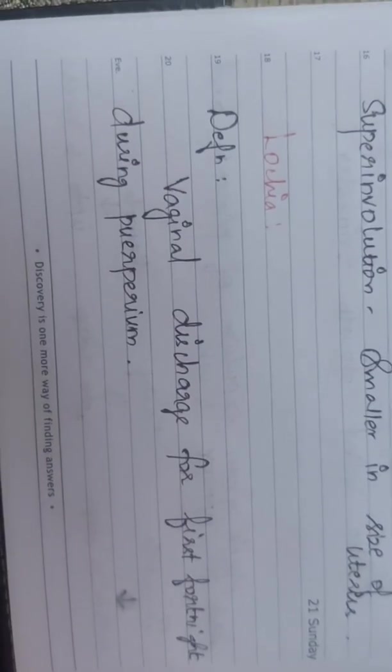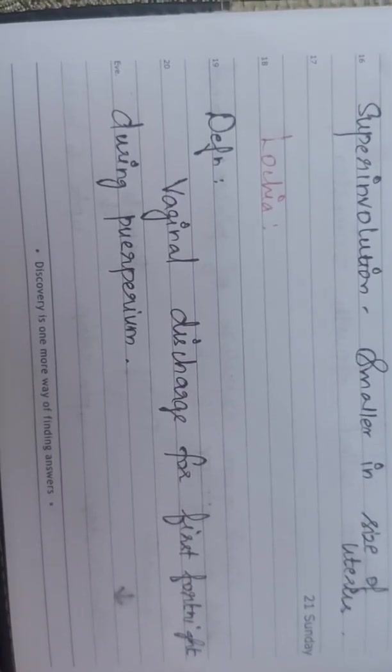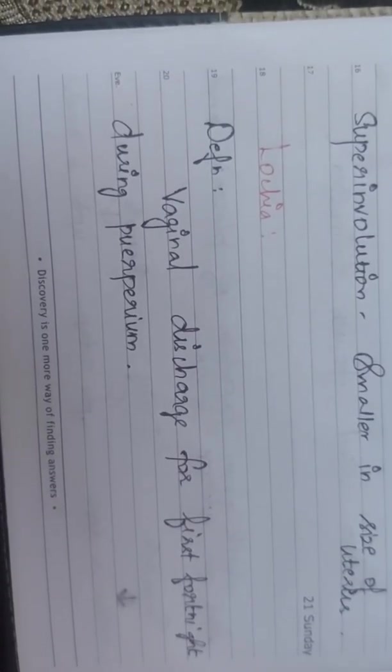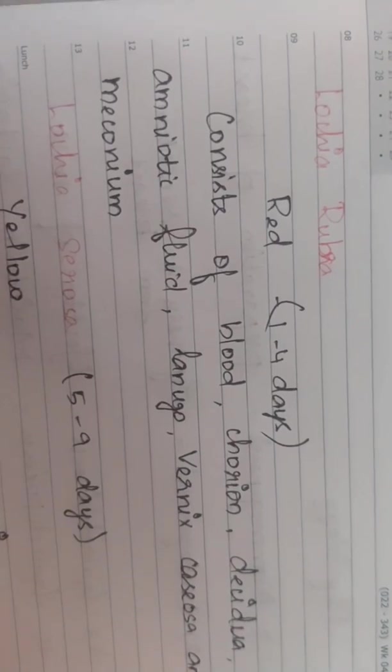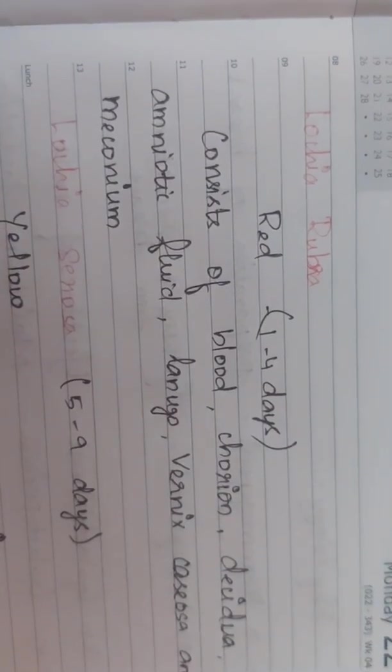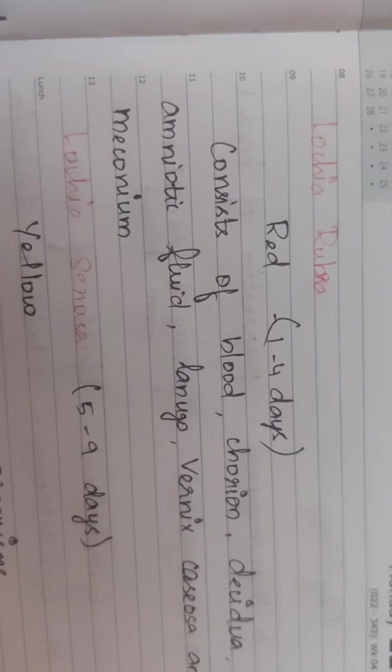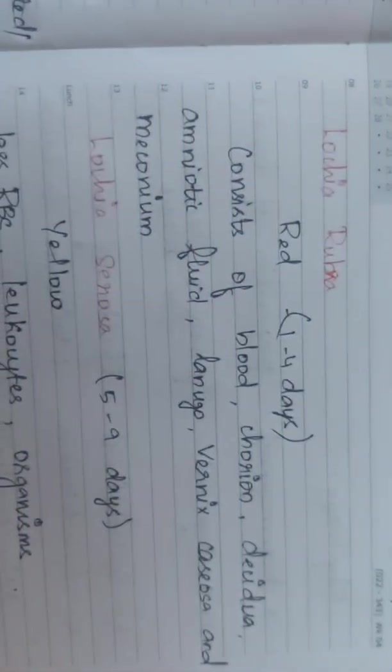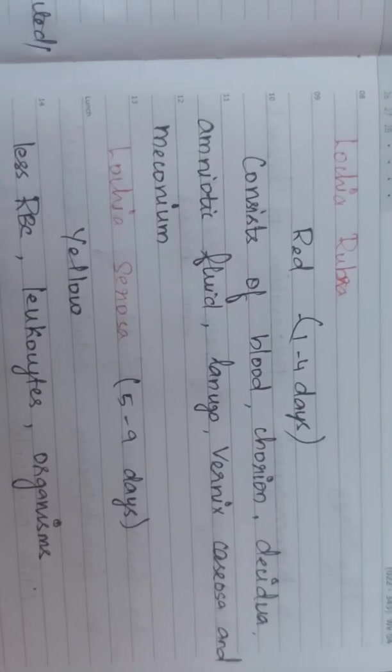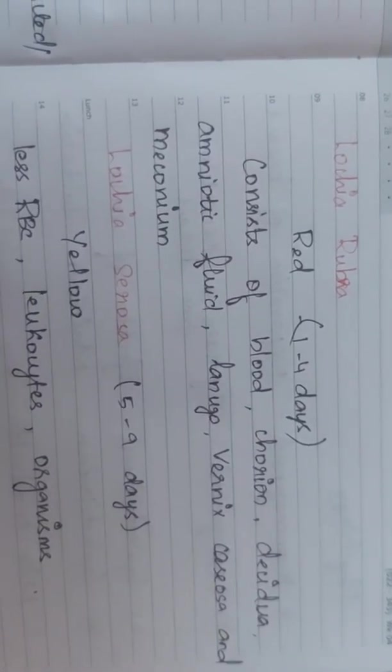Lochia is the vaginal discharge for the first fortnight during puerperium. Lochia rubra is red in color, occurring one to four days after delivery. It contains blood, chorion, decidua, amniotic fluid, lanugo, vernix caseosa, and meconium.